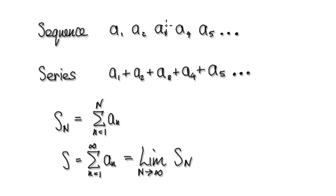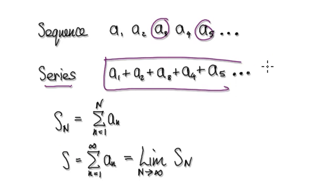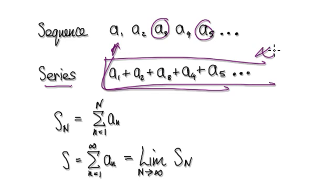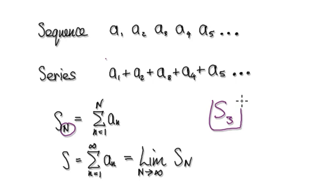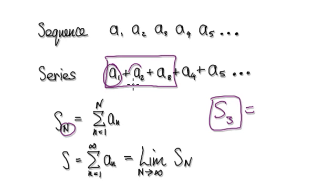With sequences, you only care about the value of each term. With series, you're actually summing up everything from 1 all the way to infinity, and we would denote that with this capital S. But if you're summing up, say, S3, that means you're summing up the first three terms — you're adding this value, add this one, add this one.